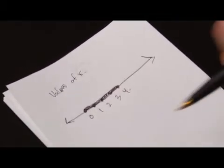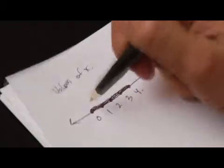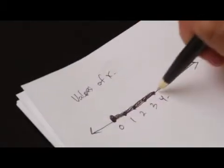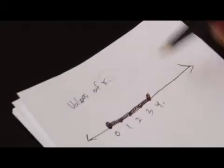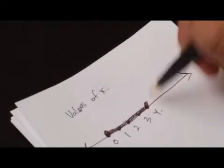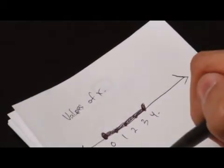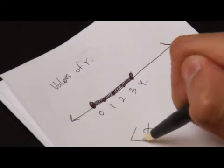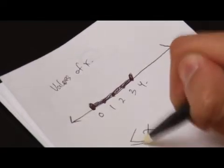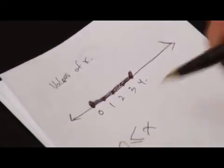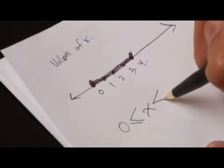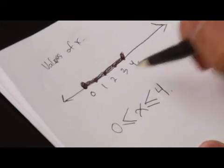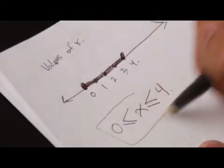And then we're able to understand here that because it's a dotted line on both ends, we're going to include 0 and 4. So we know here that x has to be greater than or equal to 0 and x has to be less than or equal to 4 from this particular equation.